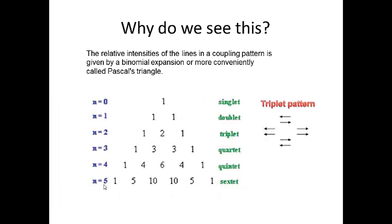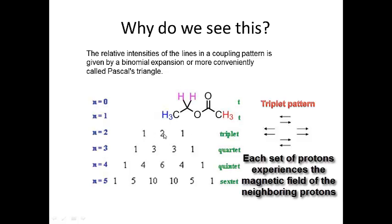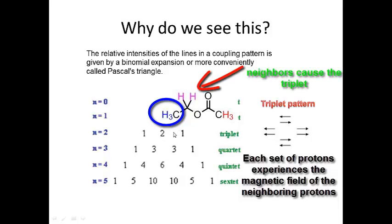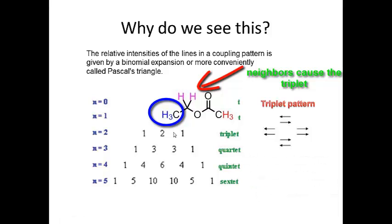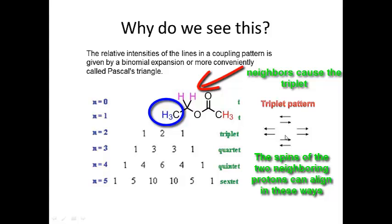The reason we see this splitting is that neighboring protons experience each other's magnetic fields in different ways. For a singlet, N is zero, so no splitting occurs. For a triplet, two neighboring protons can align with or against the field: both against, both with, or one each way — giving three effective field combinations. The middle line of the triplet is taller than the two outer lines because two of the four spin combinations are equivalent, making that line more intense.